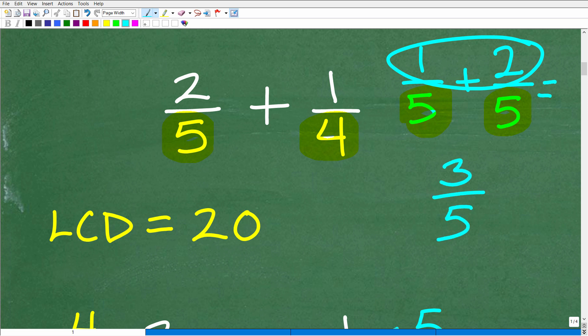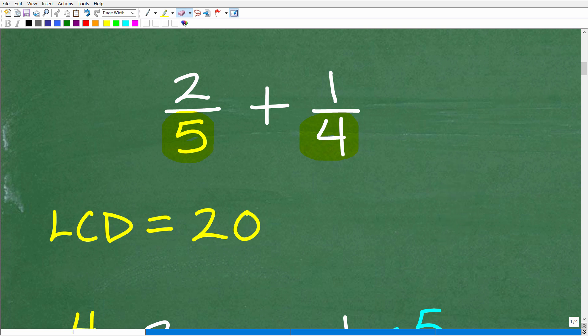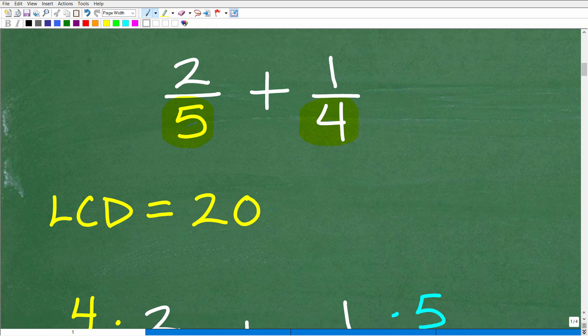But of course, in the real world, not every single fraction problem is going to be this easy. So what about a situation like the one we're looking at right here? The denominators are not the same. So what do you have to do? Well, what you typically have been taught, and it is correct, okay, I'm not trying to say that you don't need to know this. You need to understand how to find the lowest common denominator.